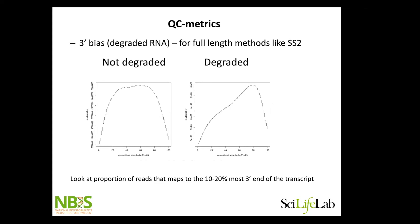For full-length methods, we can look at coverage across the genes. With good quality RNA, you should have coverage all over the gene. But if you get RNA fragmentation and capture the poly-A tail, you will get a strong 3-prime bias because you'll mainly sequence the 3-prime end of transcripts. For Smart-seq2, I always look at this, and cells that show strong 3-prime bias I would probably discard.